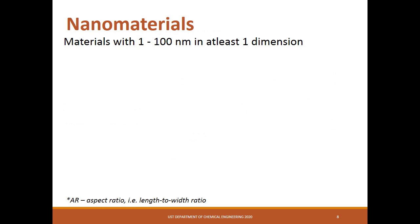In principle, nanomaterials are described as materials with a length of one to one thousand nanometers. However, the widely accepted range is between one and one hundred nanometers in at least one dimension. This range is also the quantum regime and is the reason why many nanomaterials exhibit quantum effects that make them suitable for electronics, semiconductor technologies, and quantum technologies.